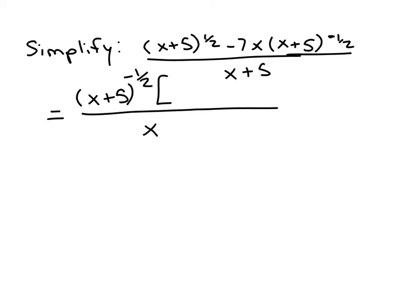And I'm just going to write the x plus 5 on the bottom. We'll leave that alone for now. So figuring out what's left in the numerator here, we should subtract. So first of all, the x plus 5 we had originally to the positive one-half power. So to figure out the remaining exponent, we should subtract this negative one-half power that we had.